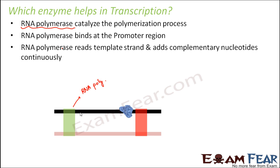As the RNA polymerase moves along, it reads the strand and continuously keeps on creating the corresponding complementary strand. For example, if on the template strand the sequence is something like A, G, T, A and so on, as it passes along this strand it reads it and creates the complementary bases on the other side, forming the corresponding RNA segment.